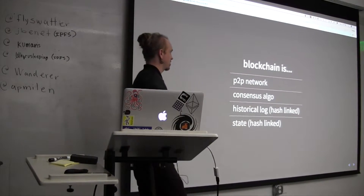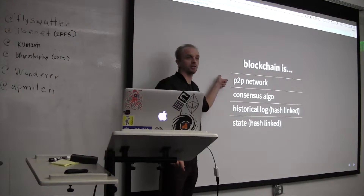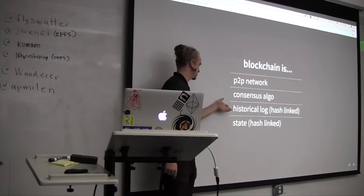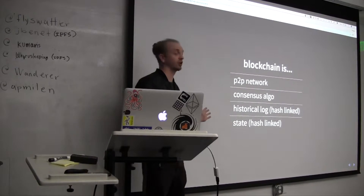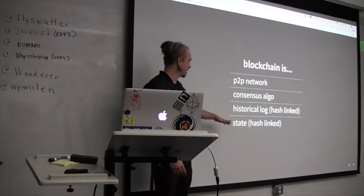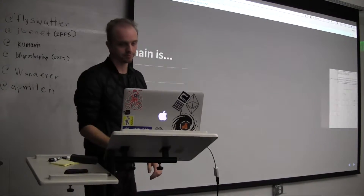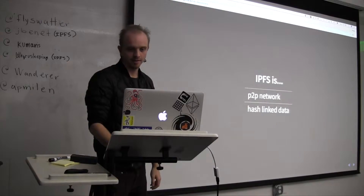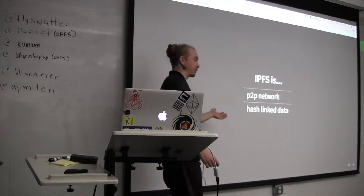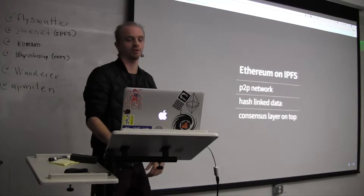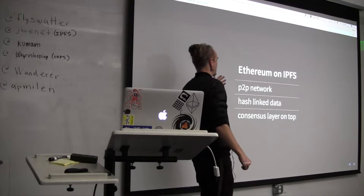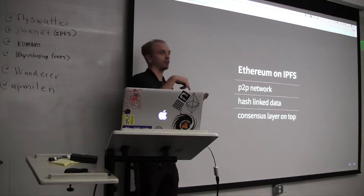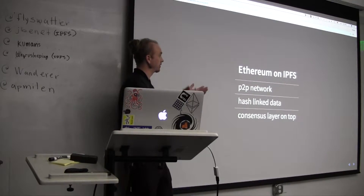So what's a blockchain? It's a combination of a couple things. You have a peer-to-peer network, you have a consensus algorithm, you have some historical log which in aggregate gives you the current state. Both the historical log and the current state are hash-linked data. So IPFS is a peer-to-peer network that serves hash-linked data, and Ethereum on IPFS is a peer-to-peer network where you get your hash-linked data for the state and history, then layer your consensus algorithm on top to resolve the current head and current state.